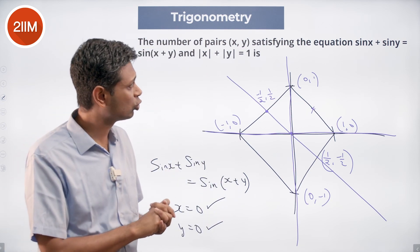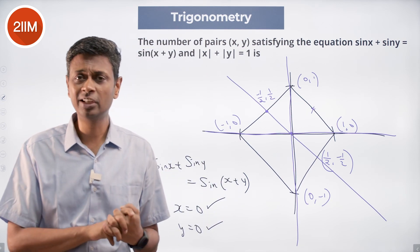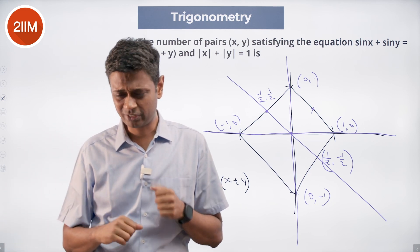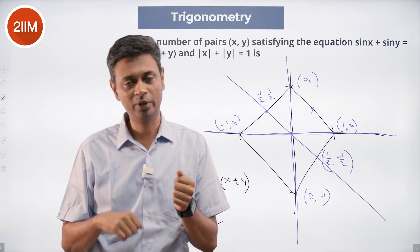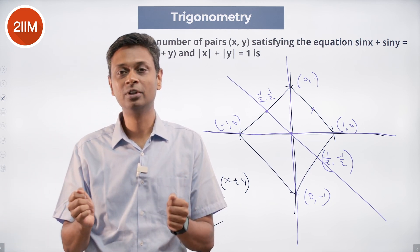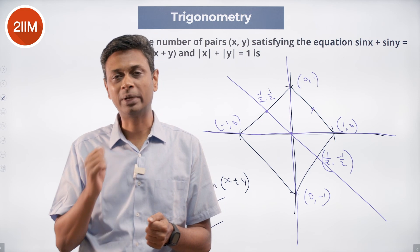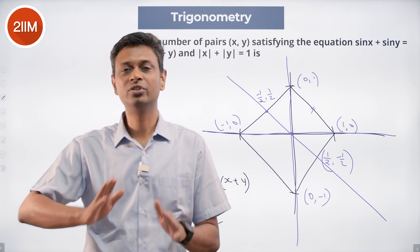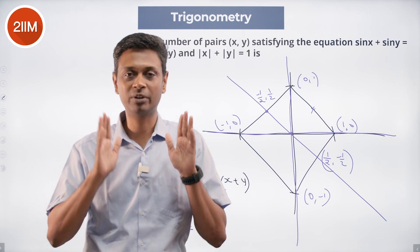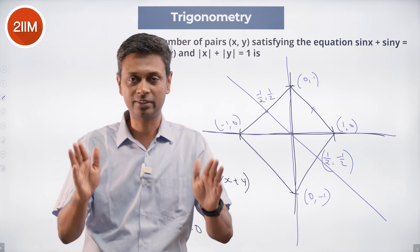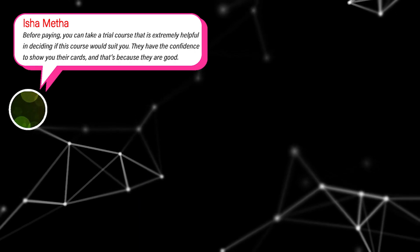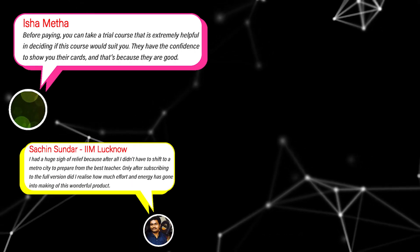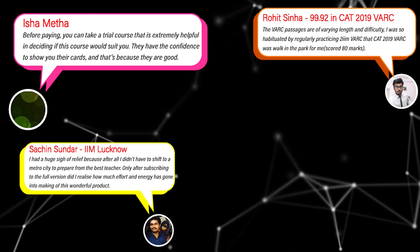To summarize the approach: put x equal to 0, put y equal to 0, put x equal to y, put y equal to minus x — plug all of these in and see where we land. That gives us the full set of possibilities and the six intersection points.